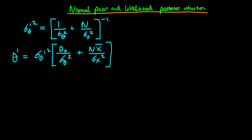In this video, I want to talk about the intuition behind the posterior mean and variance which we derived in the last video. We derived that the posterior distribution of theta given our sample of data x is normally distributed with a mean given by theta prime, and a variance given by sigma prime theta all squared.